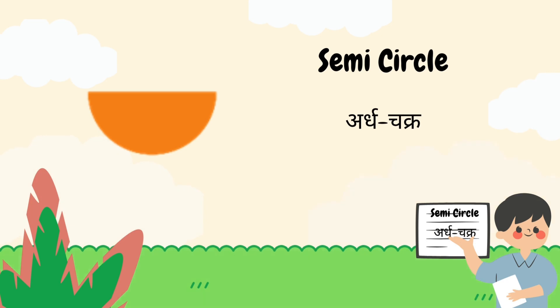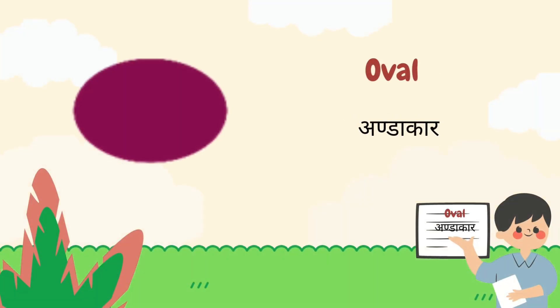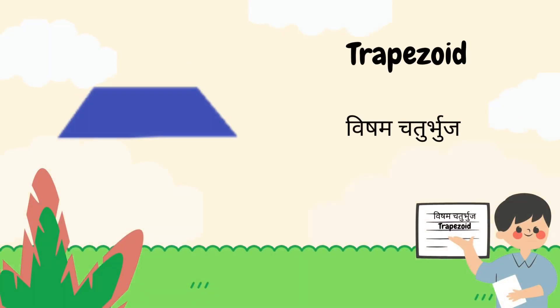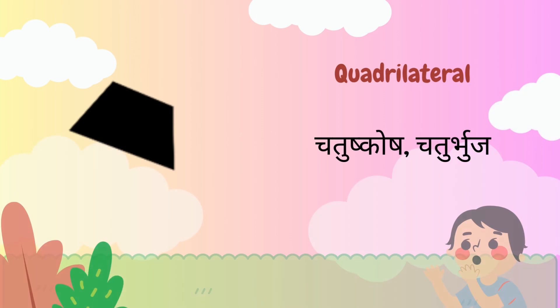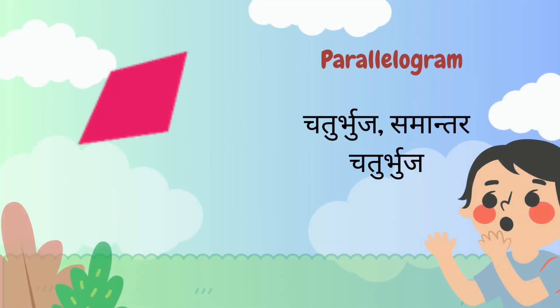Semi-Circle. Oval. Trapezoid. Quadrilateral. Rhombus. Parallelogram.